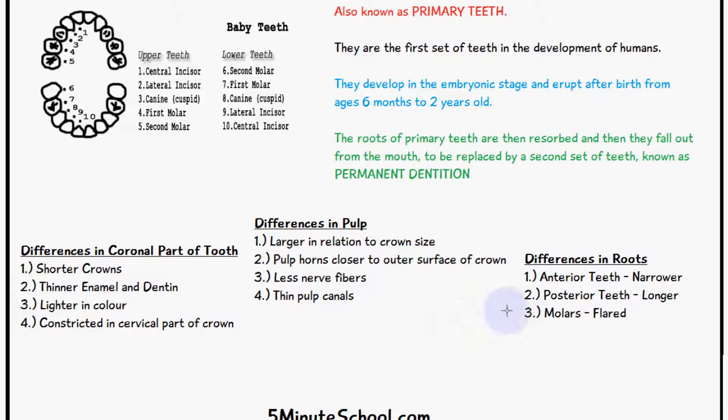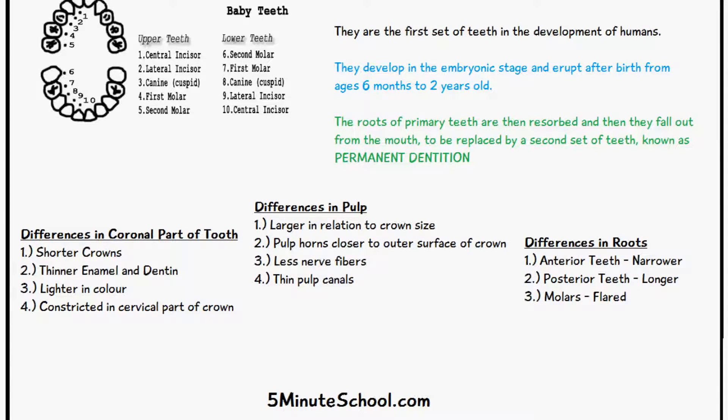The differences in terms of roots: for the anterior teeth they are much narrower, for the posterior teeth they are longer, and for the molar teeth they are more flared as well.